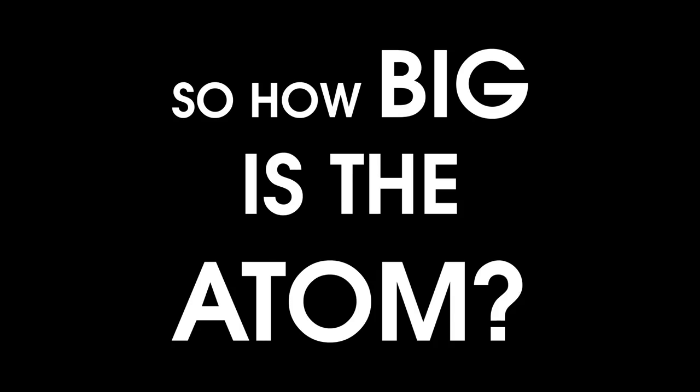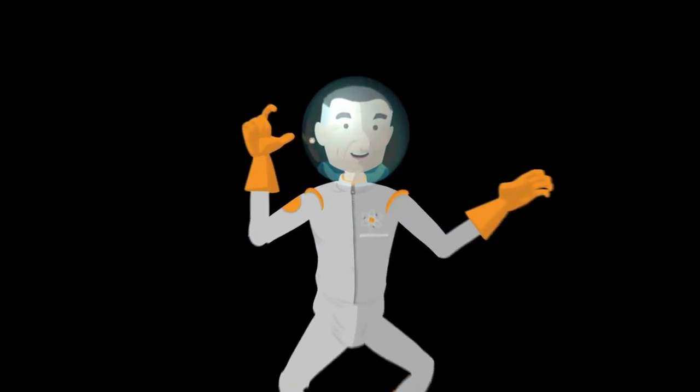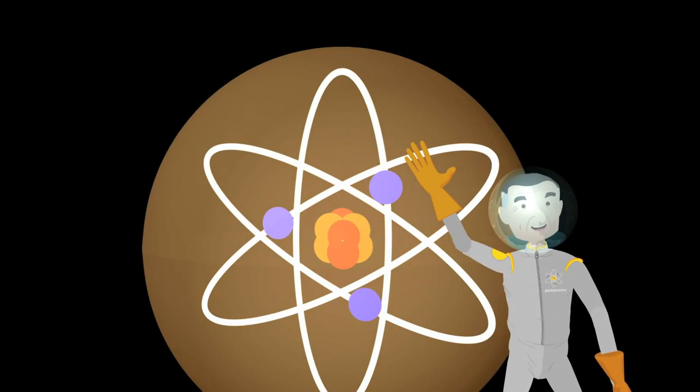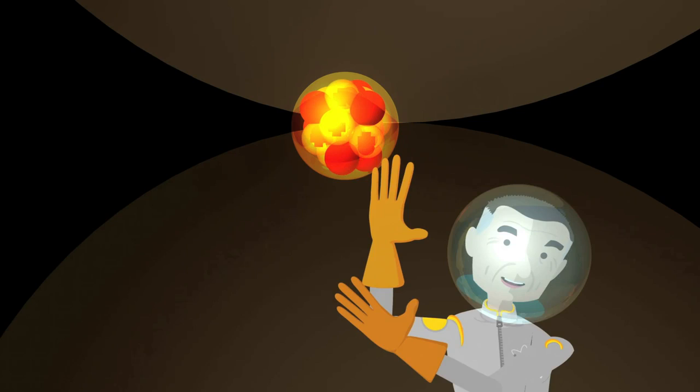So how big is the atom? Well, that's really, really, really small. And you know what? It gets even more crazy. Let's now look inside of each atom. That's the blueberry, right? What do you see there?